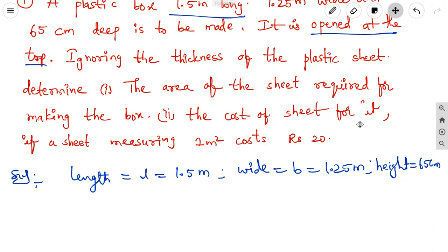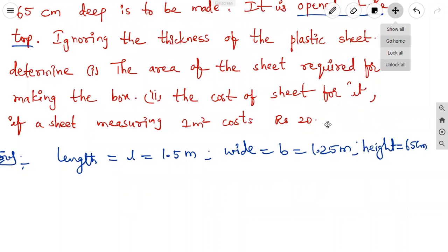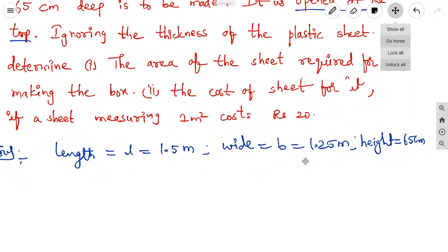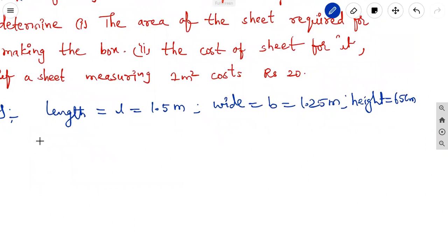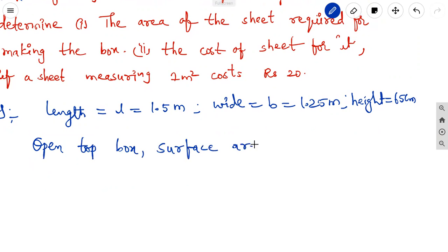The second part asks for the cost of the sheet if 1 meter square costs 20 rupees. For the open-top box, the surface area equals 2H(L + B) for the four side walls plus L × B for the bottom.